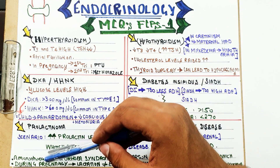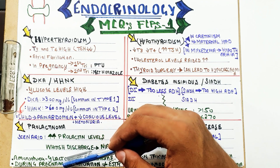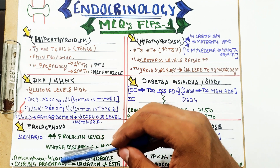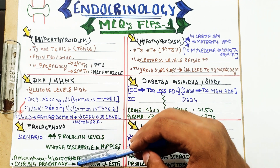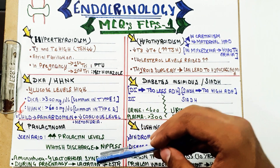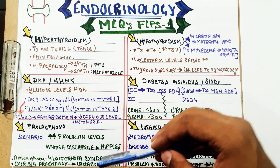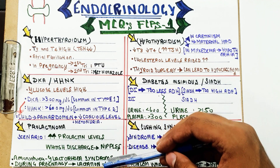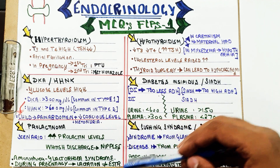Another MCQ that can come is that during pregnancy, lactation is inhibited — it is inhibited due to high estrogen levels.